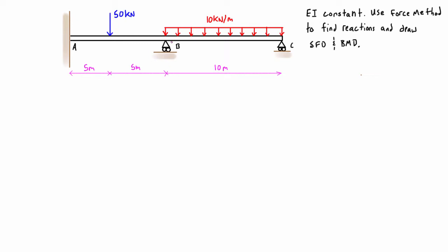The first thing we always do with the force method is use superposition to separate out the redundant reactions. The redundant reactions are those that put the structure over and above being statically determinate. In a case like this where you have a fixed end on one side, we want to remove the reactions that aren't the fixed end, because that's going to make this beam look like a cantilever and easier to work with.